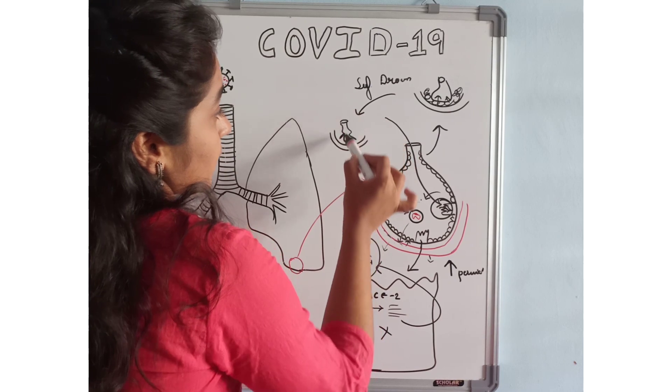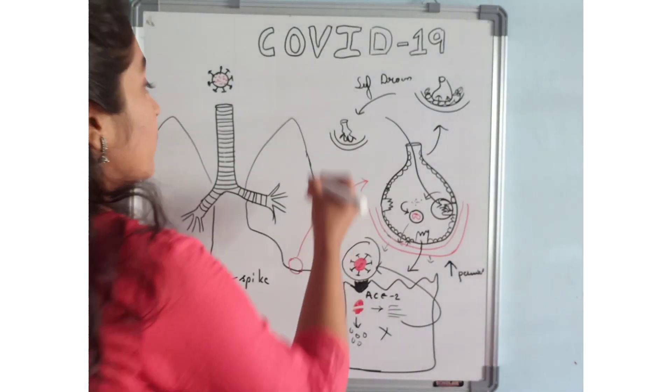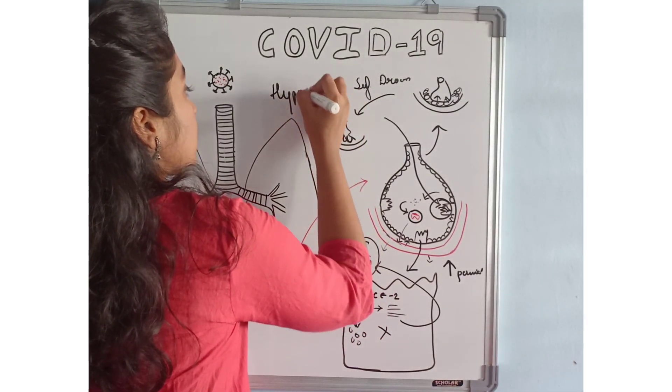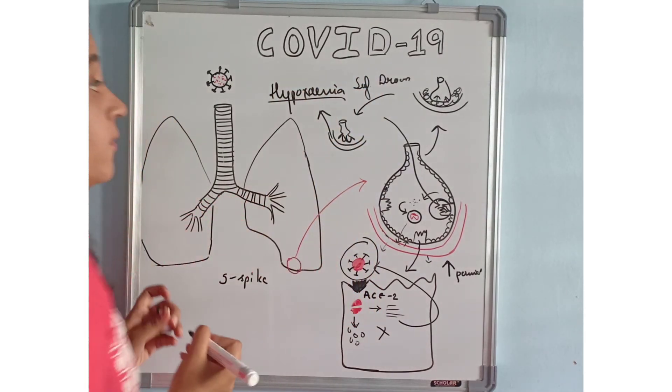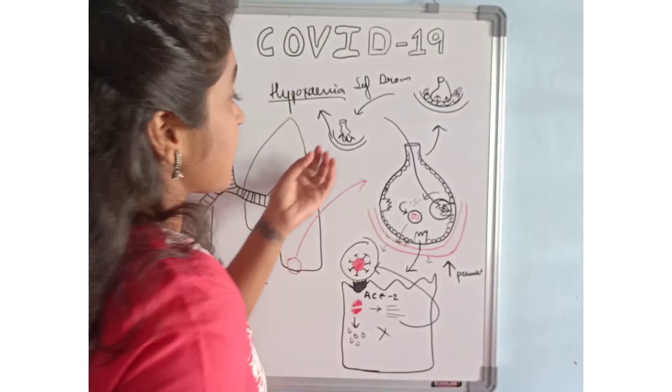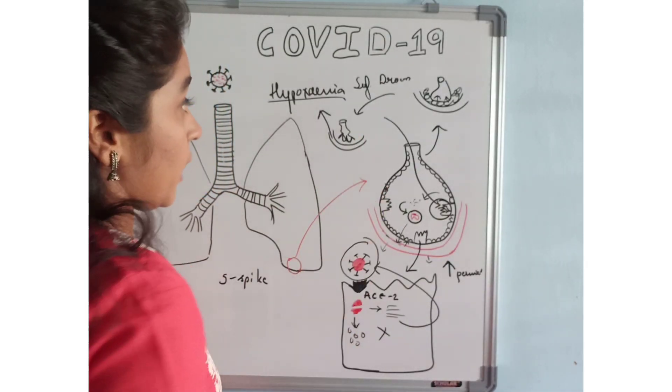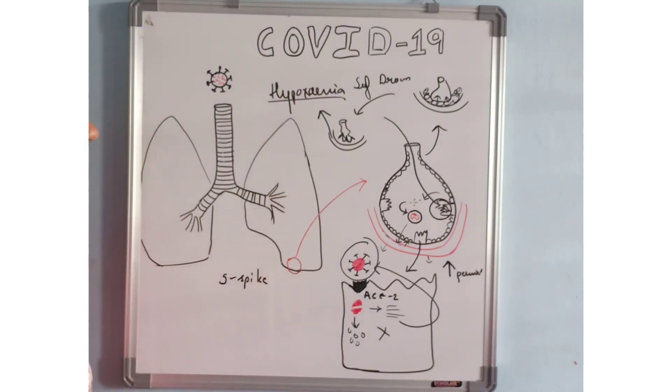Once our alveoli is collapsed, there can't be more air exchange. That will lead to hypoxia. This is a very dangerous thing that will increase the work of our alveoli. That is the main cause for breathlessness in this disease.